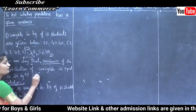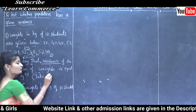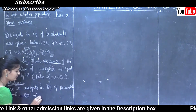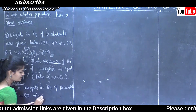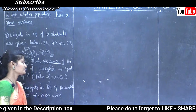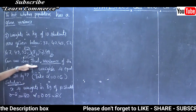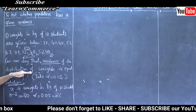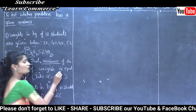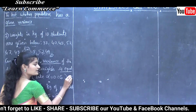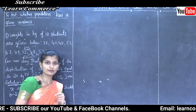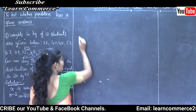Alpha level of significance is 0.05, that is 5%. The question states variance of distribution of weights is equal to 20 kg square — this is an equal-to type, so we can say this is the null hypothesis, denoted by H0.